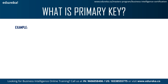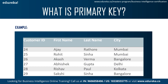Let's check out an example of a primary key. Here is a customer table with customer ID, first name, last name, and city. As we can see, there are different customer IDs with different customer names and cities. The first name, last name, or city can be repetitive — for example, Rohit Sinha and Sakshi Sinha both have the same last name. So the column with unique values is the customer ID column.